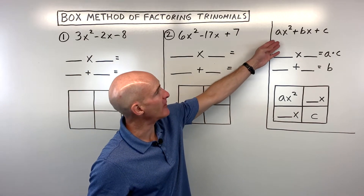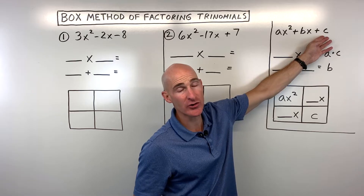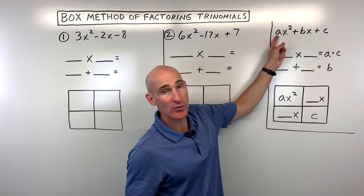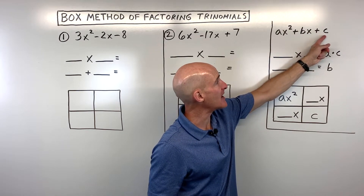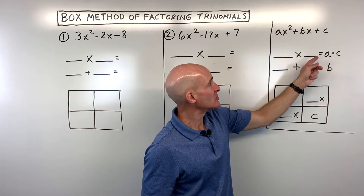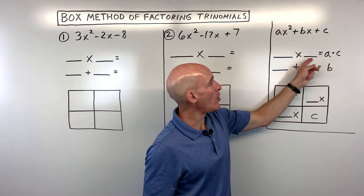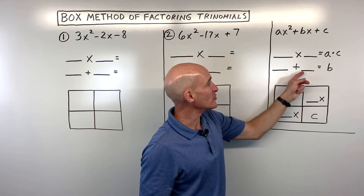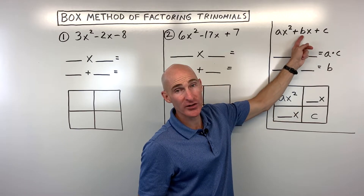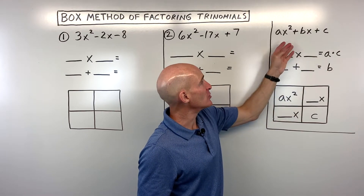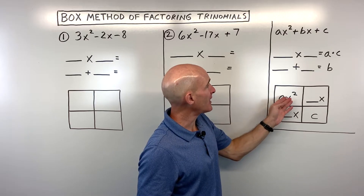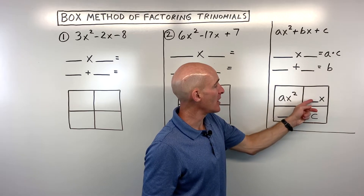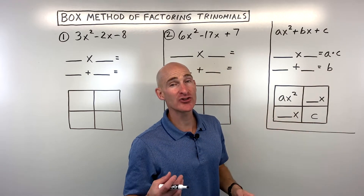The basic idea is you have a polynomial with three terms — that's why we call it a trinomial. You take this leading coefficient, whether it's 1 or something other than 1, and multiply it by the constant. That's the product A times C. You ask yourself: what two numbers multiply to A times C, but also add to the middle coefficient B? Then you put the first term in the upper left-hand corner, the constant in the lower right-hand corner, and those two numbers go in the remaining two boxes.